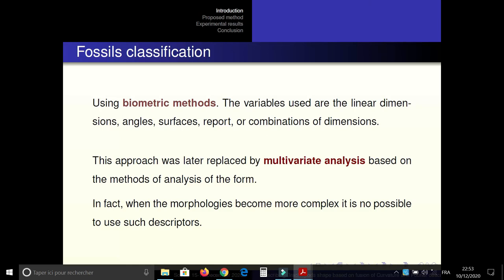We use a biometric method for fossil classification. The variables used are the linear dimension, angles, surfaces, rapport, or combination of dimensions. But when the morphologies become more complex, it's not possible to use such descriptor.